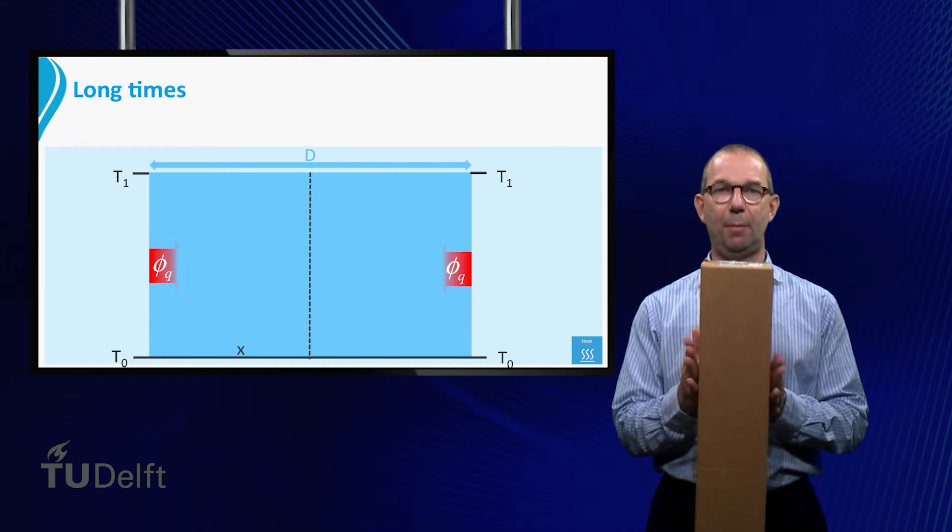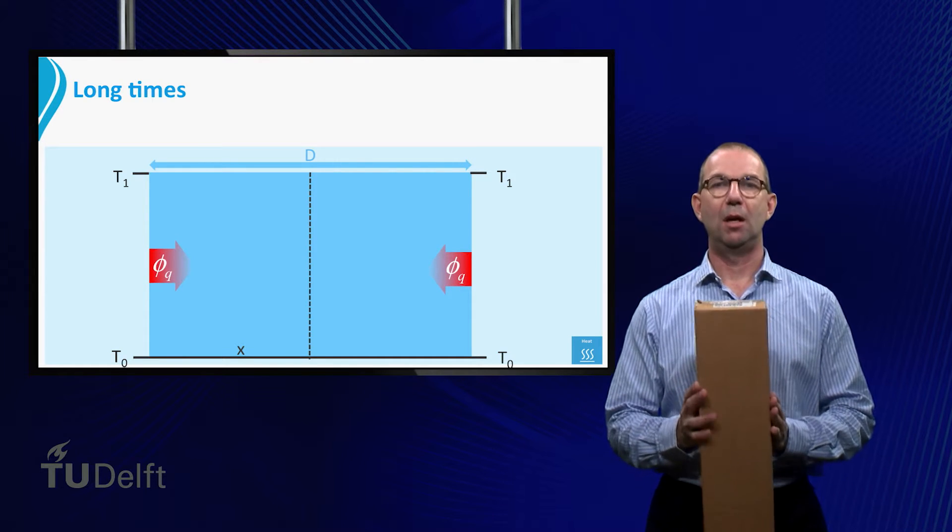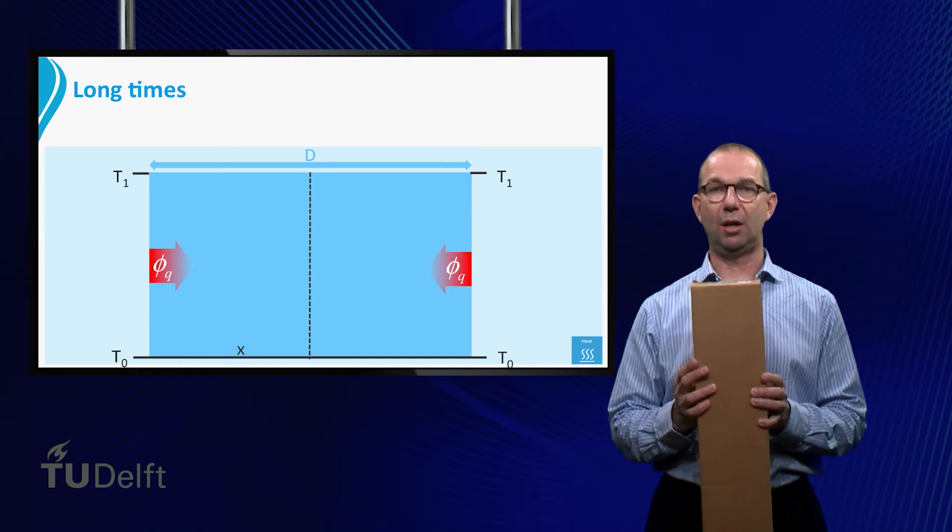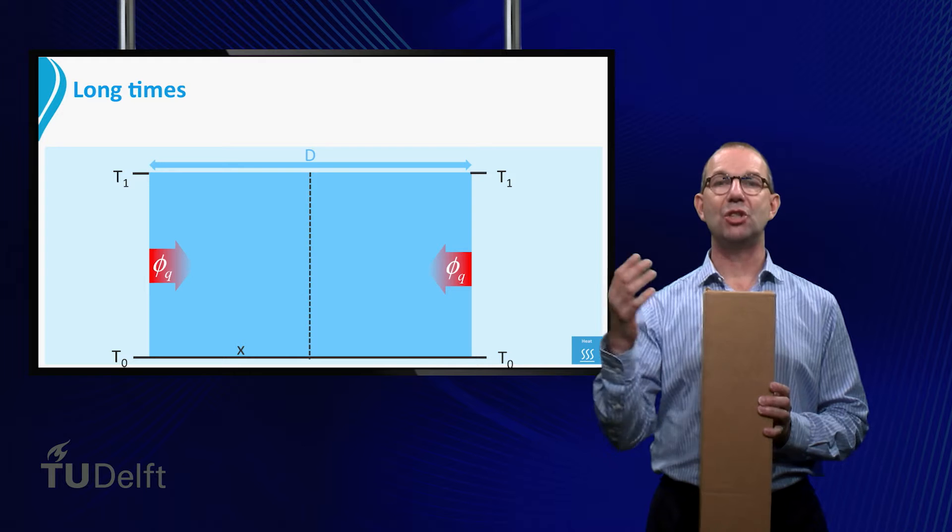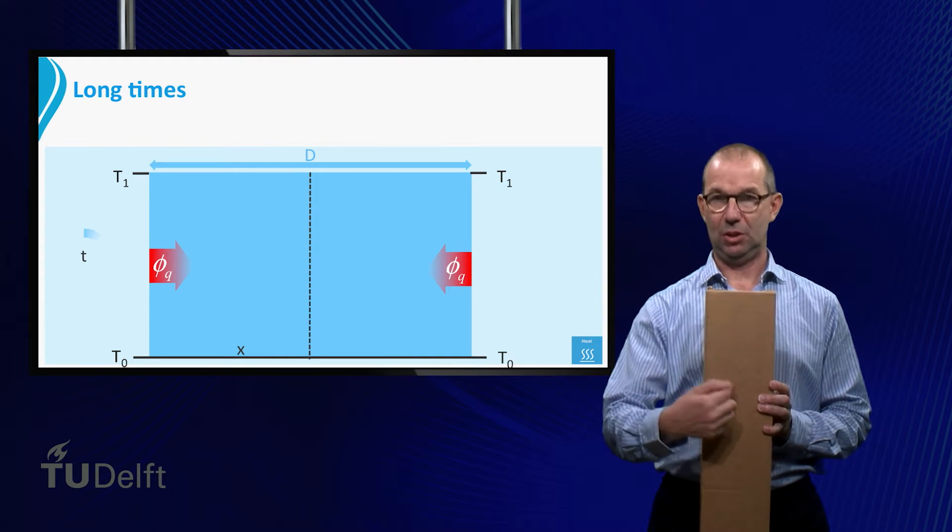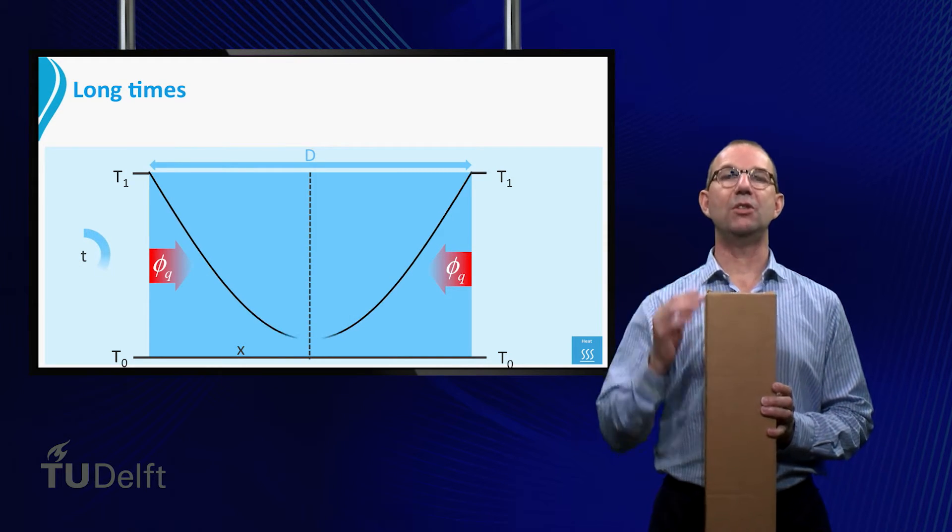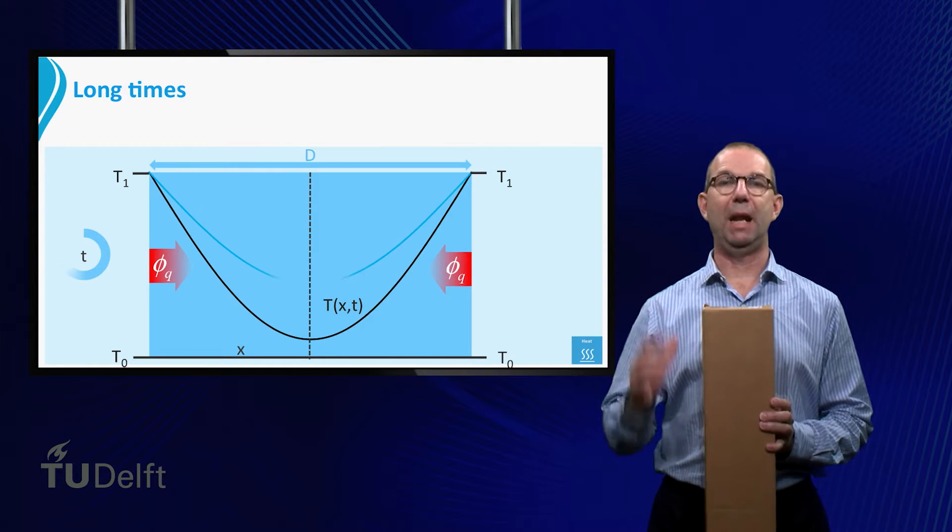Now heat is coming in from both sides. We already dealt with the start of the heat process via penetration theory. At some point the middle of the plate is also heated up. This is for instance the case when we look at the black line.